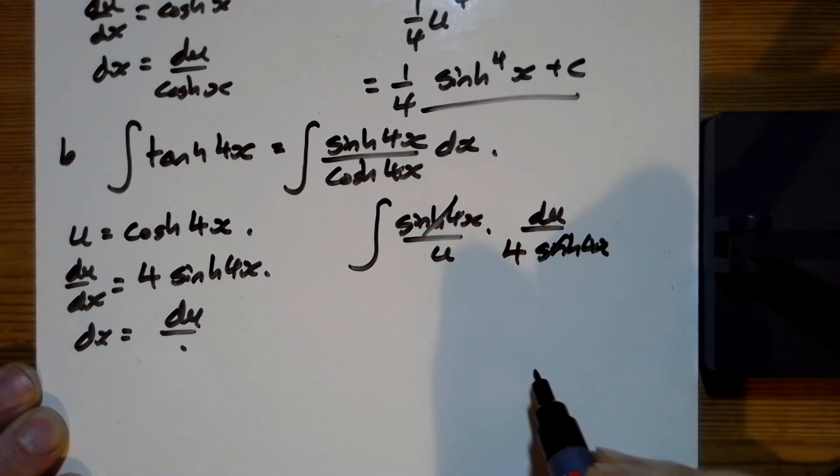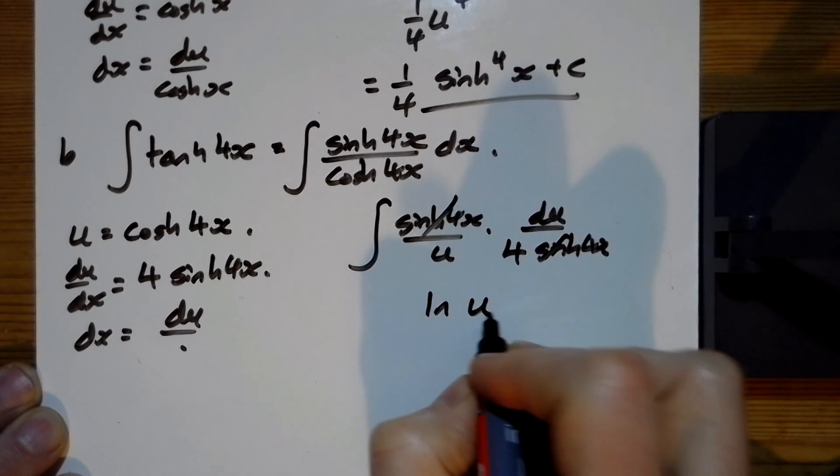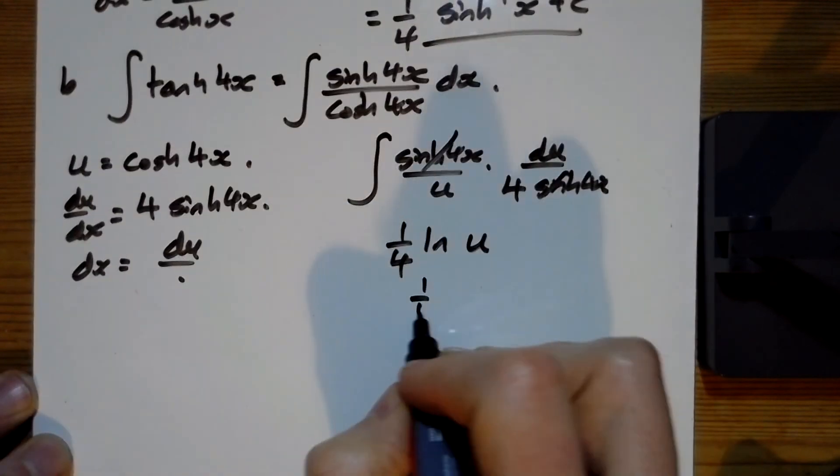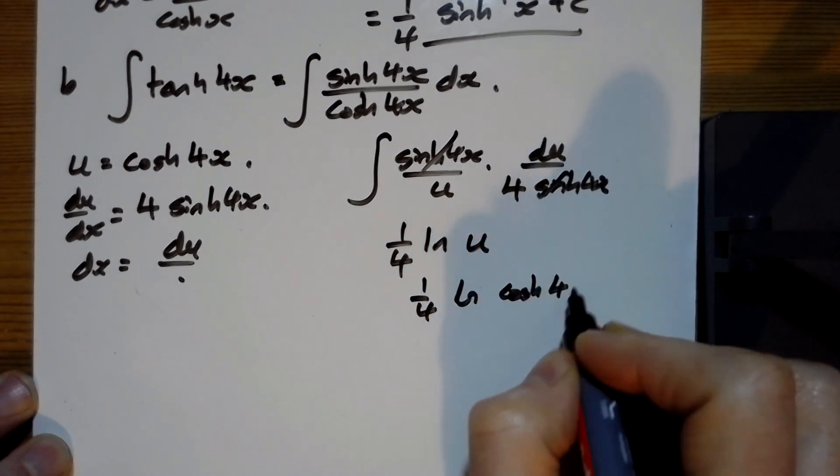Look again, those sinhs are cancelling there, giving it just the integral of one over u, which is ln u. We've also got the quarter coming out there, and so we've got a quarter, the ln of the cosh of four x.